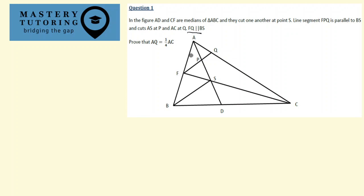Without wasting any time, let's put this information on the diagram. So FP is parallel to BS — I'm going to mark these lines to show the line is parallel to BS. Now I want to construct the line BS in such a way that it intersects with AC. I know I'm not using a ruler but it shouldn't be too bad. This new point I'm going to call point E.